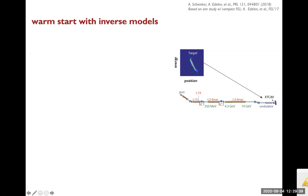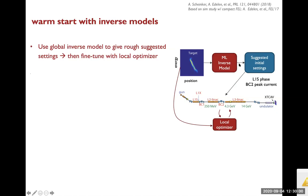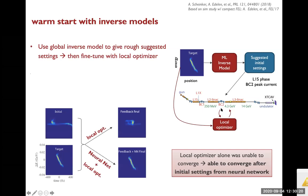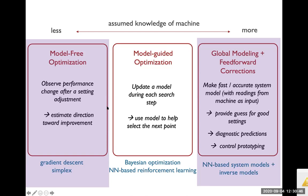We tested this a couple of years ago at LCLS in a preliminary study. We have a specific target longitudinal phase space to achieve at the transverse deflecting cavity, so we took some machine data and trained an inverse model to give suggested settings for two settings that speak strongly to longitudinal phase space. We then used a local optimizer to fine-tune. The result: when the beam phase space was messed up and we used only the local optimizer, it could not converge — but when we gave it the initial guess from the neural network, it converged closely to the target longitudinal phase space.